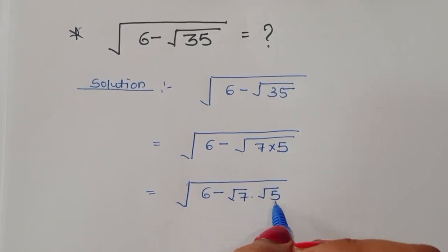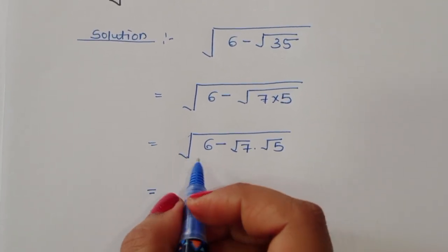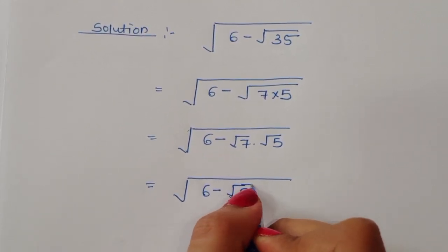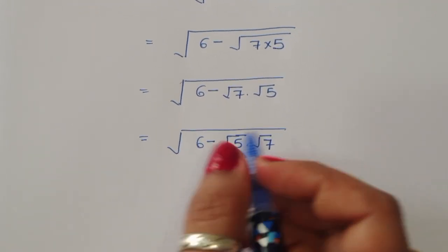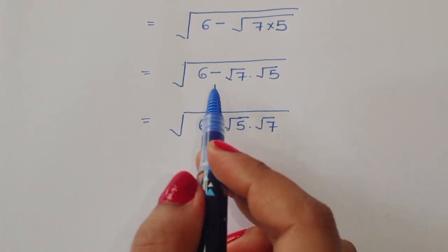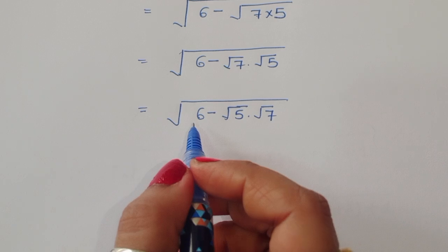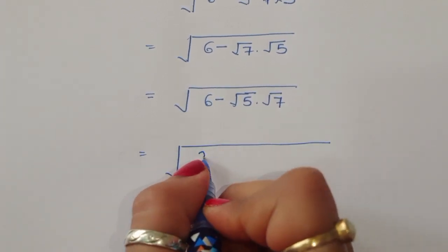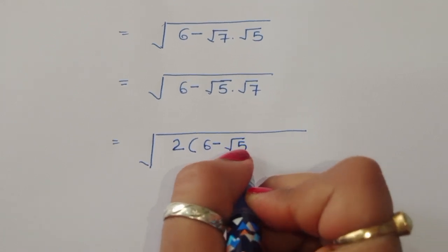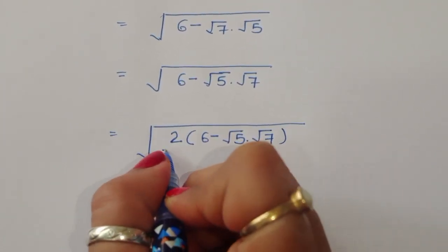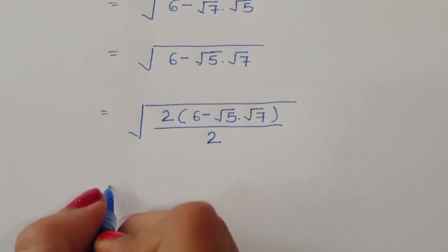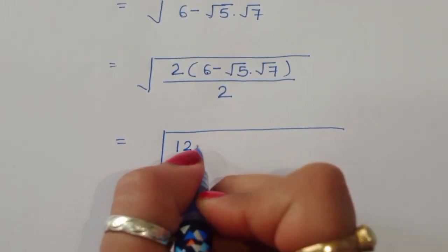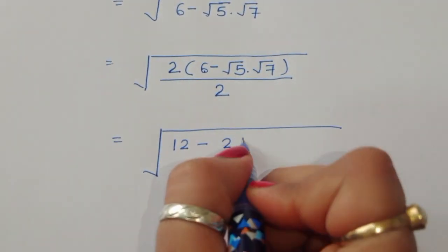So we have √(6 - √5 × √7). Now we multiply and divide the numerator and denominator by 2. Doing so gives us √[(2 × 6 - 2√5 × √7) / 2], which equals √[(12 - 2√5 × √7) / 2].